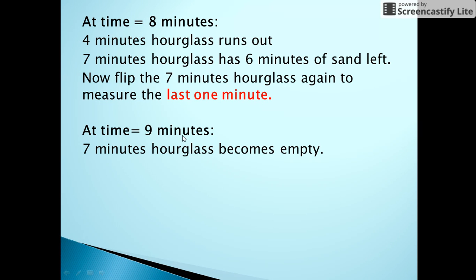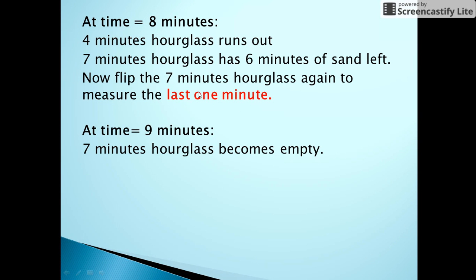Now at t equals nine minutes, the sand from the upper part of the seven minutes hourglass would completely trickle down to the bottom, since the seven minutes hourglass had only one minute of sand left in it when we flipped it at t equals eight minutes. In this way we can measure nine minutes with the help of the two hourglasses.